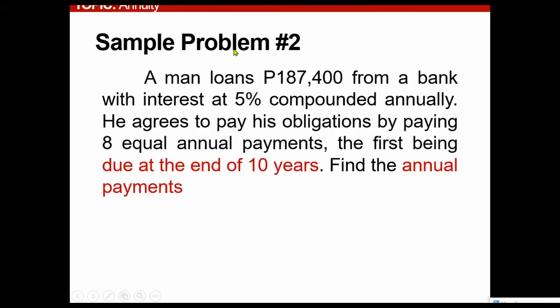Now for our second sample problem. So you will notice here, we are asked to find the annual payment. Basically, a man loans $187,400 from a bank with interest at 5% compounded annually. He agrees to pay his obligations by paying 8 equal annual payments, the first being due at the end of 10 years.